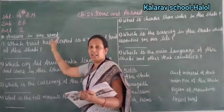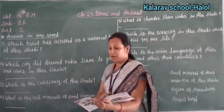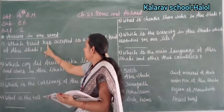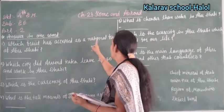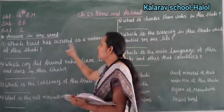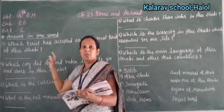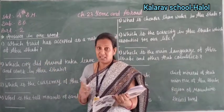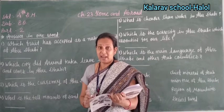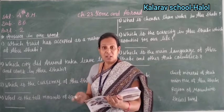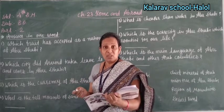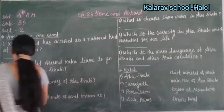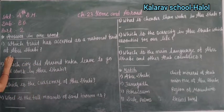Now we see answering one word. First number: which fruit has been accepted as the national fruit of Abu Dhabi? The national fruit of India is the mango, right? And the national fruit of Abu Dhabi is the date. So here the answer is date.